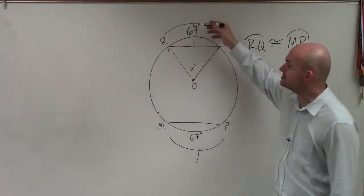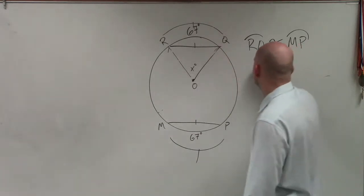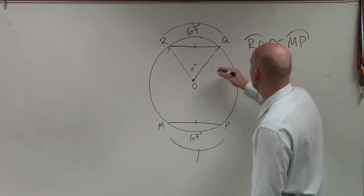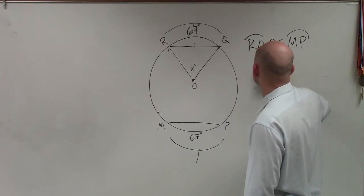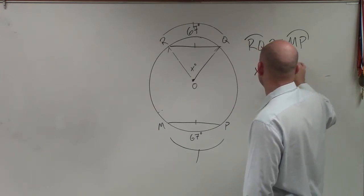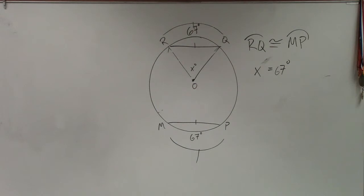So if that's 67, then that has to be 67. So x equals 67 degrees. And that's it. Done.